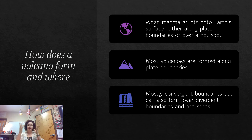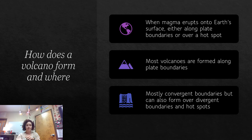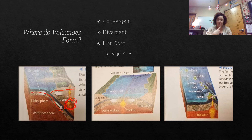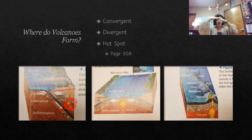At convergent boundaries, you have oceanic crust going underneath continental crust, forming all of this pressure. Going back to the zit analogy — think of those super deep ones that, as soon as you go to pop them, it's boom. That's essentially what happens at convergent boundaries: where the plates come together, you create all this extra pressure which forces magma upward and causes it to finally erupt.